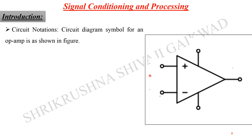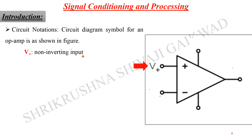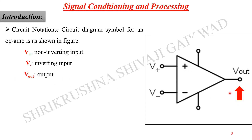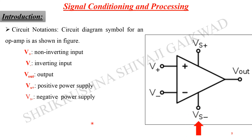The circuit diagram symbol for the operational amplifier looks like a rectangular shape with two inputs and a single-ended output. The non-inverting input is represented with a positive sign, and the inverting input is represented with a negative sign. The output signal, V-out, is the single-ended output. The positive power supply is on one side and the negative power supply is on the other side.